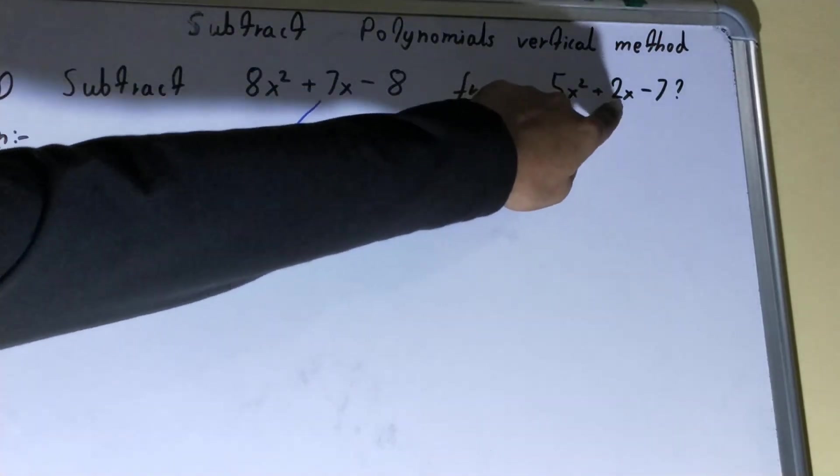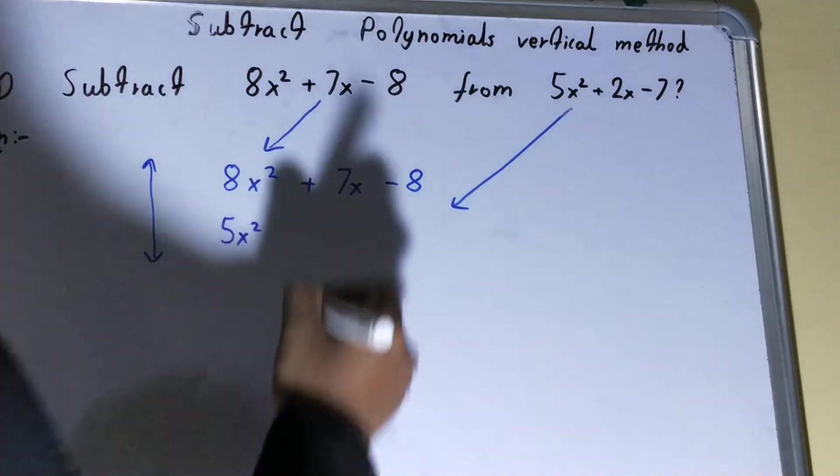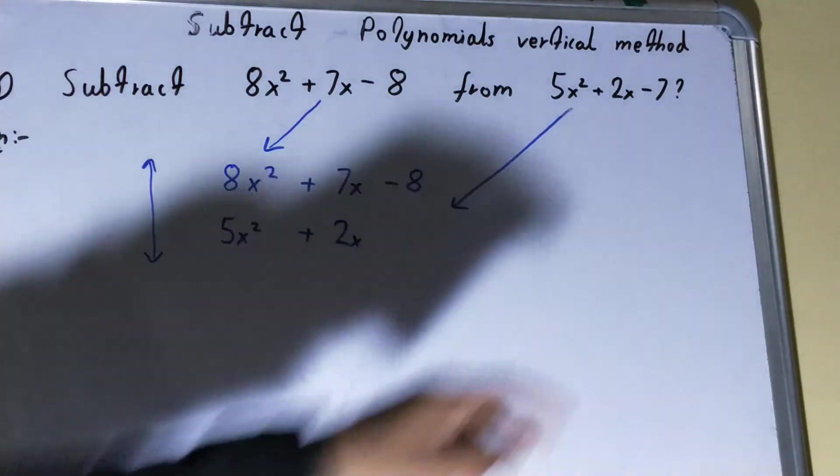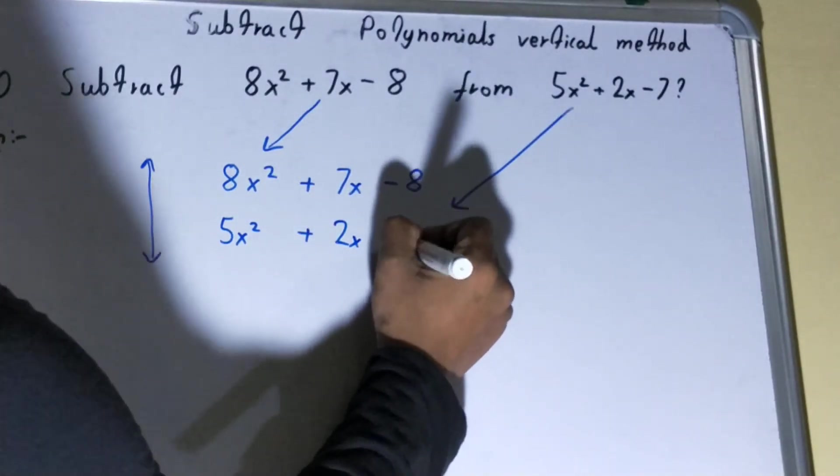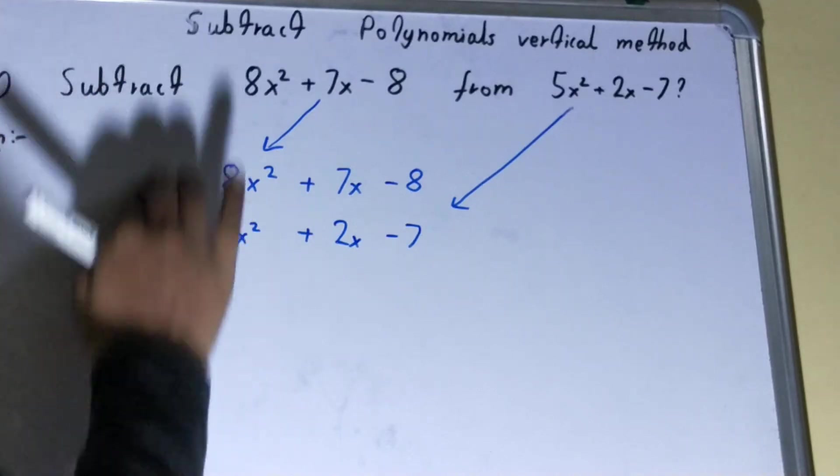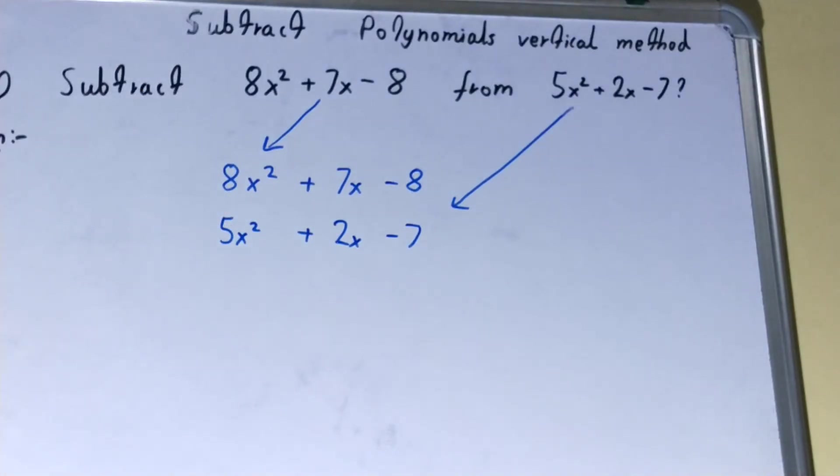Similarly, 2x needs to be placed below 2x only. Same case for -7. Once you have placed them, you need to see whether you need to subtract or add.